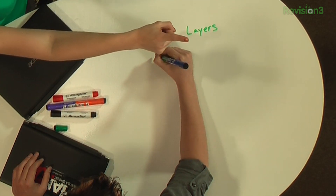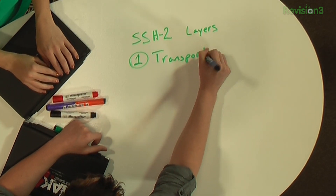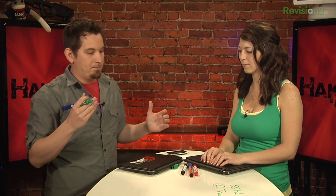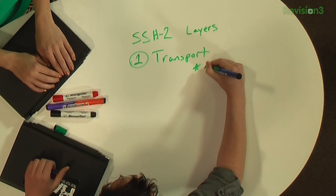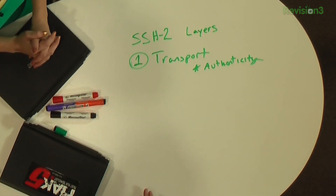There are a bunch of different layers to this protocol. The first layer is the transport layer. The transport layer handles all kinds of key exchange, server authentication, compression, and encryption. It also handles re-keying — typically after one gigabyte of traffic or one hour, whichever comes first. Everything is encrypted in an SSH connection, and the re-keying ensures that if someone were trying to brute-force your session, they wouldn't have enough time because the key has already reset itself.